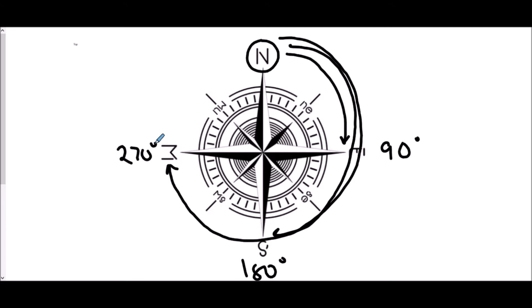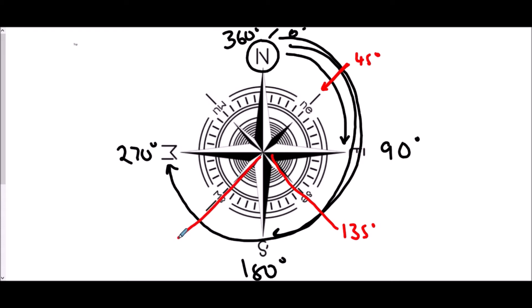If we were at north and wanted to get all the way back around to north, we could have turned 360 degrees. The other option is that we turned zero degrees — we haven't turned at all and stay pointing north. The halfway points: north-east is 45 degrees, halfway between zero and 90. South-east is 90 plus 45, so 135 degrees. South-west is 180 plus 45, so 225 degrees. And north-west is 270 plus 45, so 315 degrees.